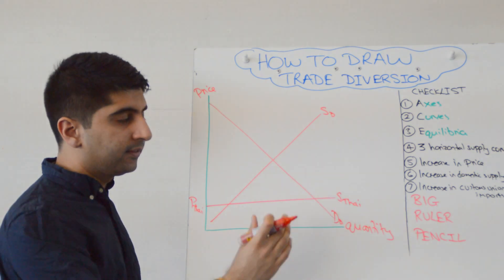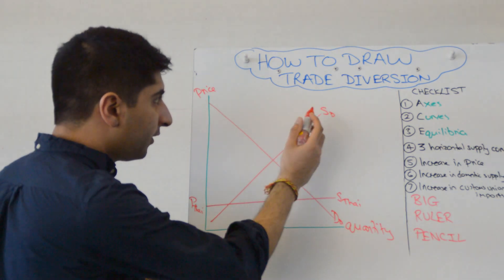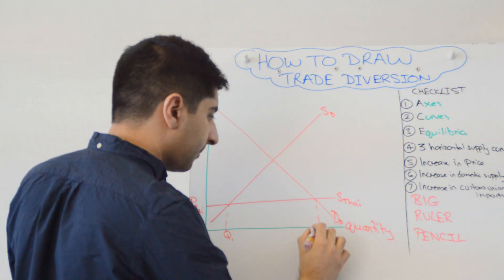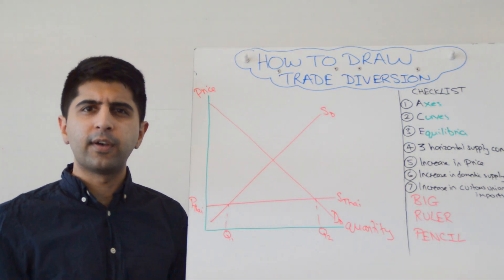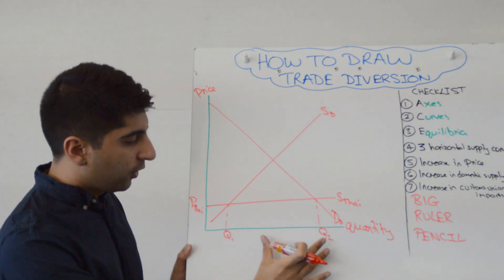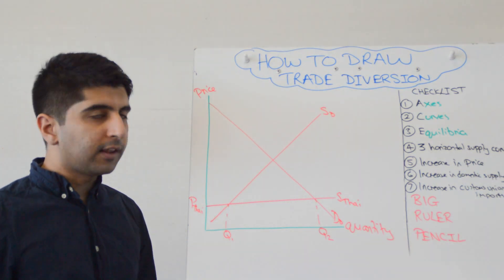Thailand have got the comparative advantage, and therefore their prices are the lowest in the market. The world price is set by Thailand because they are the most efficient. And as a result, domestic supply is here at Q1, and domestic demand is there at Q2, with the excess demand being satisfied by imports coming in from Thailand. So start with that. Very simple start right here.